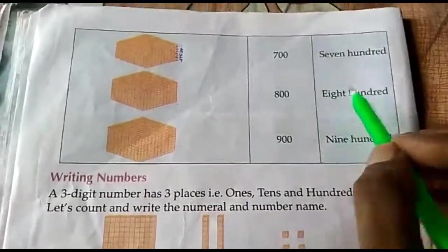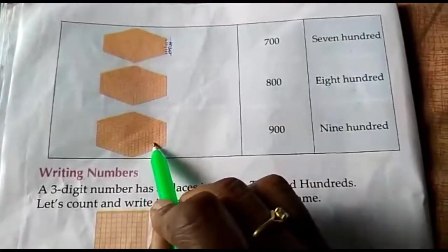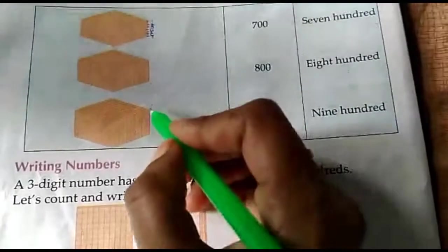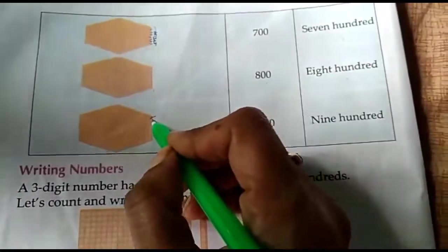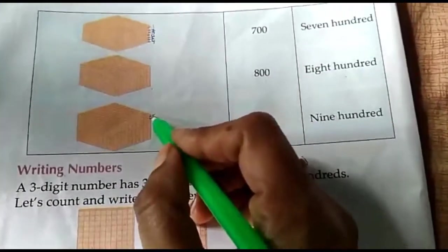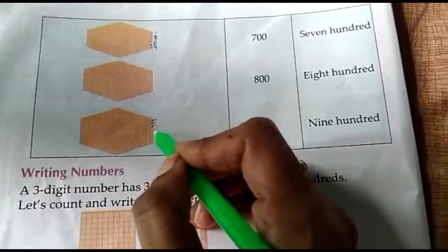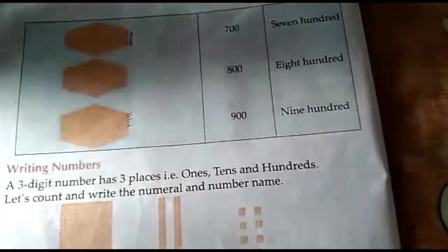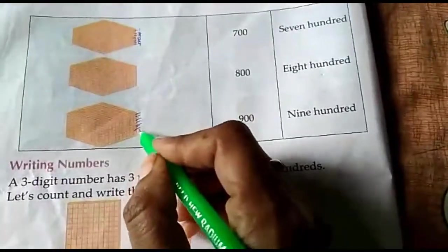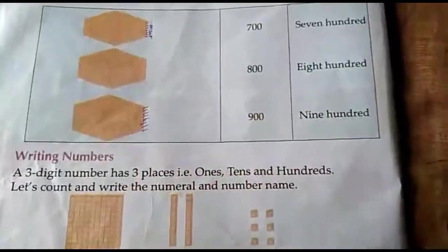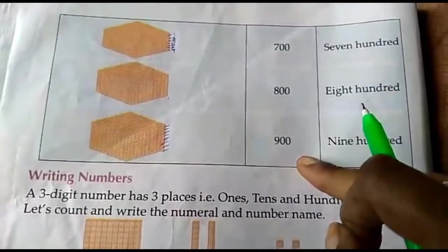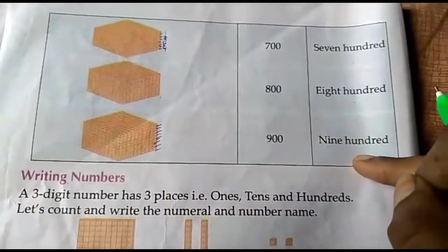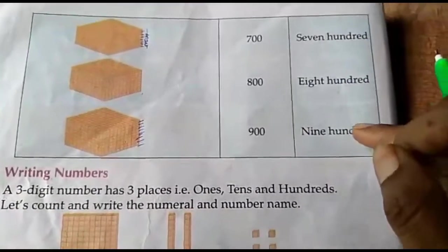Eight hundred spelling. Here nine hundred. Nine boxes are there. So one, two, three, four, five, six, seven, eight, nine. So nine hundred. Nine hundred spelling.